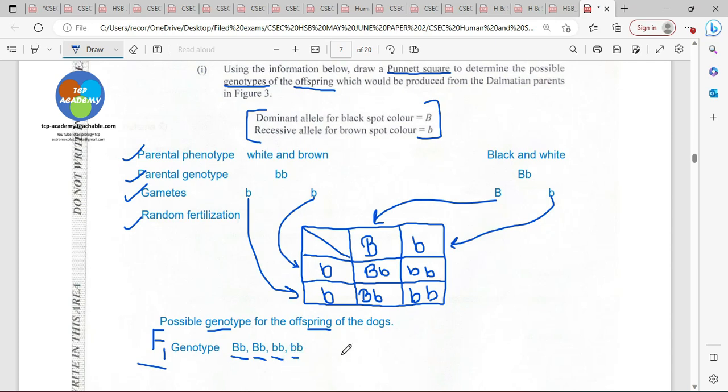Or if we were looking at the ratio, this dog here would be brown and white. This dog here would be brown and white. And then these two dogs here would be black and white. That would be their phenotype. So we'd have two black and white dogs and two brown and white dogs from this cross. I do hope my explanation helped.